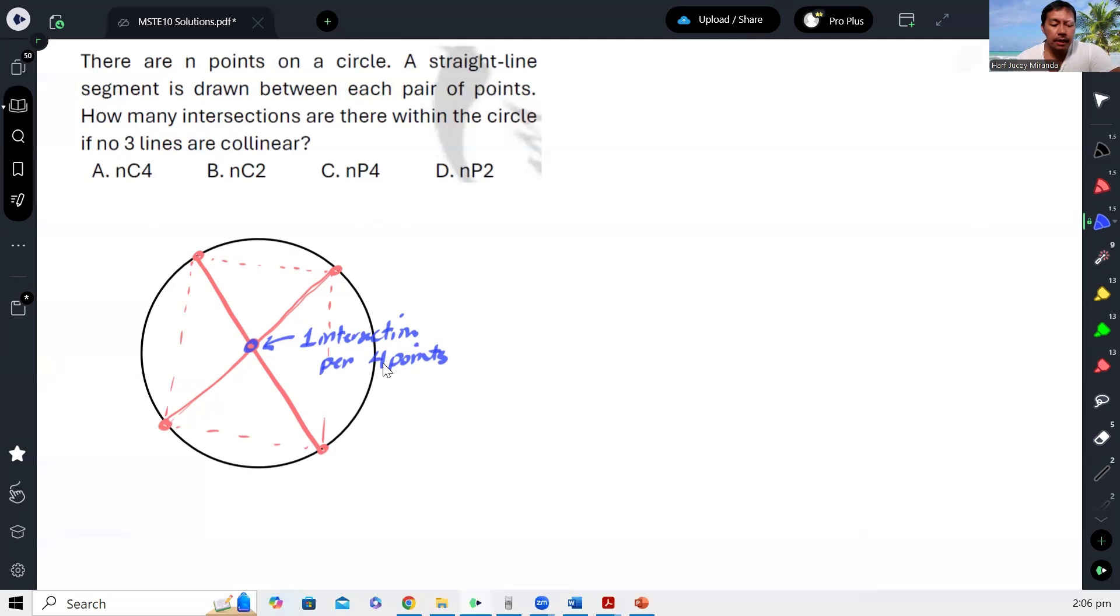Now what happens if we have n points? Diba, ilang intersection yun? Okay, so just for the sake of experiment, so kapag nagdagdag pa ako ng isa, okay, so meron ditong line, meron ditong line, meron ditong line. Okay, meron ditong line that will intersect this line. Okay, itong line na to, and then there's another line here.